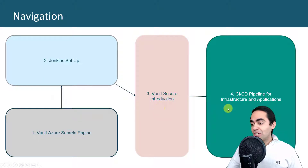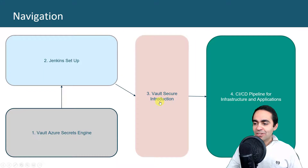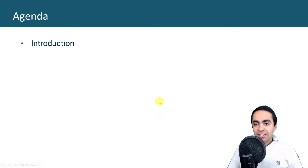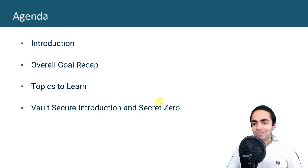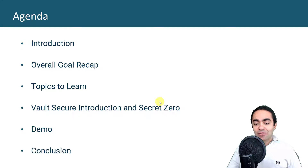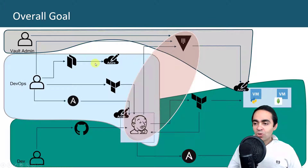In the final video we're going to talk about the entire pipeline and how we finally get the application up and running. The agenda for today: after this intro, we'll go over our goal — a recap of what we discussed in the previous two videos — then the topics for today's video: Vault secure introduction and secret zero. Then we'll do a demo, show you how we're doing all these things, and finish with a conclusion.